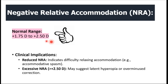Excessive NRA can be seen in latent hyperopia. These patients are already using a significant amount of accommodation at baseline to maintain clear vision, so when positive lenses are added, they can relax a larger than expected amount of accommodation because the system was already compensating for hyperopia — leading to a higher than normal NRA. Similarly, in patients with an over-minus correction, the minus lenses force excessive accommodation at baseline, so when positive lenses are added during the NRA test, the patient can relax a larger amount, resulting in excessive NRA.